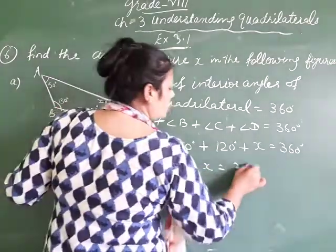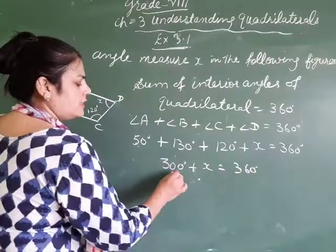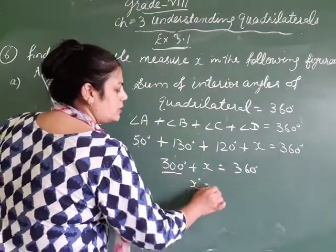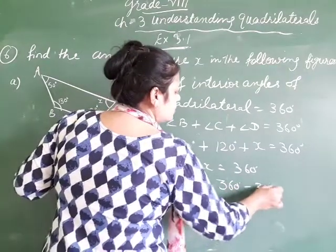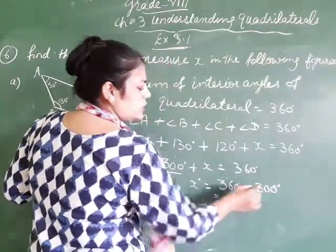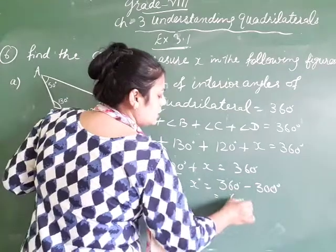So, we have to find the angle X. So, 300 plus X equals 360. Keep 300 to the right hand side. It becomes subtracting. So 360 minus 300, that is 60 degrees.